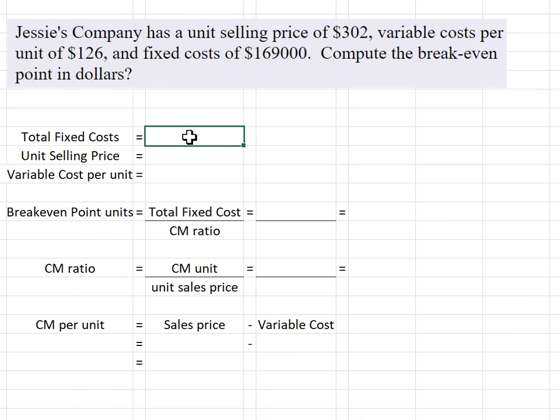Let's plug in all the information we know to make it easy to see. Unit selling price was $302, and variable cost per unit was $126. To calculate the break-even point in units, we need to take our total fixed costs, which is $169,000, and divide that by our contribution margin ratio.